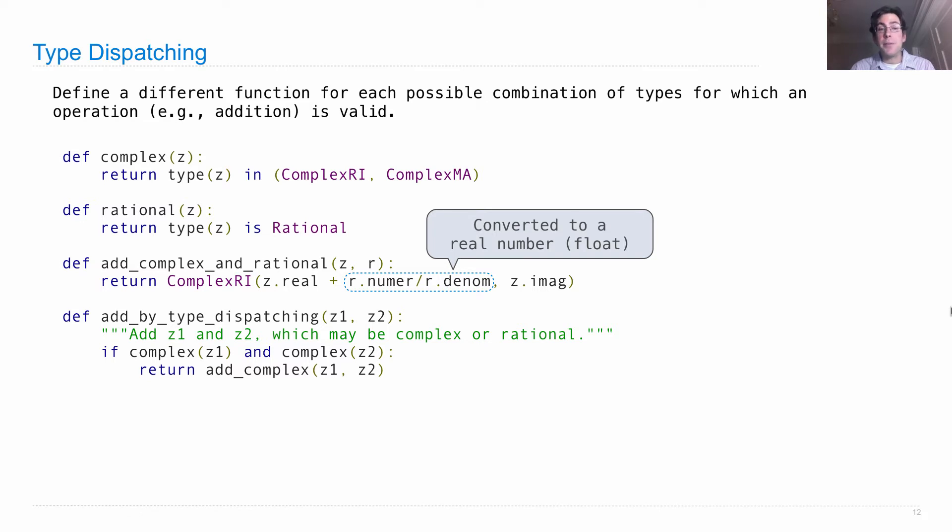So if z1 is complex and z2 is complex, then we'll just add them as if they're complex numbers. Otherwise, if one is complex and the other is rational, then we'll call add_complex_and_rational, which we just defined.